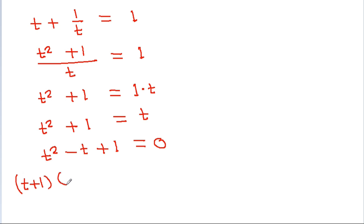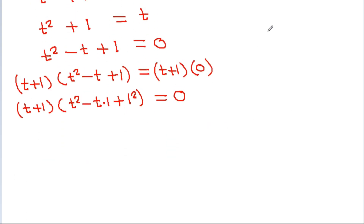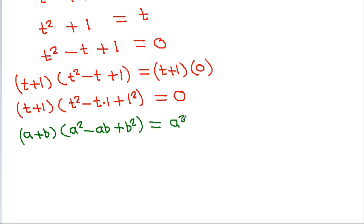So, t plus 1 times t squared minus t plus 1 will be equal to t plus 1 times 0. Using the identity a plus b times a squared minus ab plus b squared equals a cube plus b cube, this will be equal to t cube minus 1 cube, that is equal to 0.